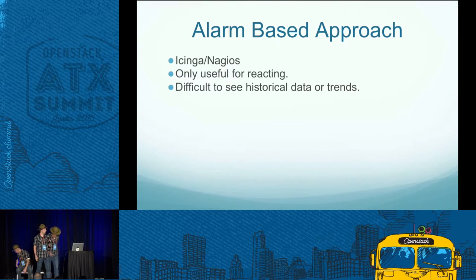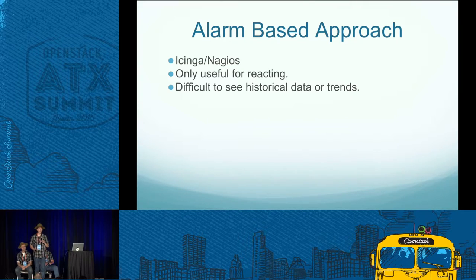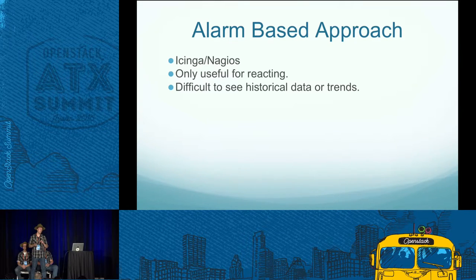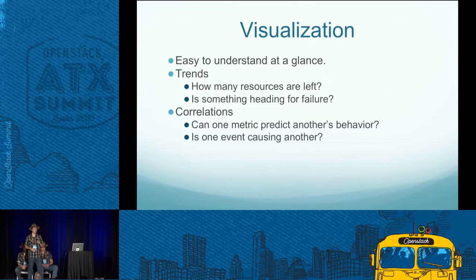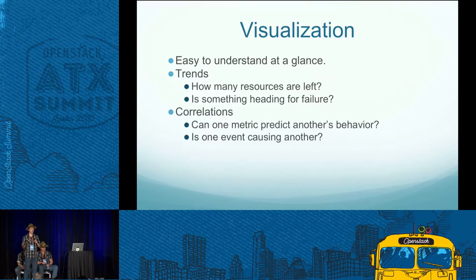When we got started, we were just using Nagios for a purely alarm-based approach. This is great — it helps you respond to problems quickly and fix them, you know where the problems are. But it doesn't help you get ahead of the problems, and it's hard to go back and diagnose problems using alarms once they've passed. So we've been moving towards more of a time series visualization approach. It's a lot easier to consume the data, understand it, see trends — whether for planning or to see if you're headed for failure — and you can also see correlations.